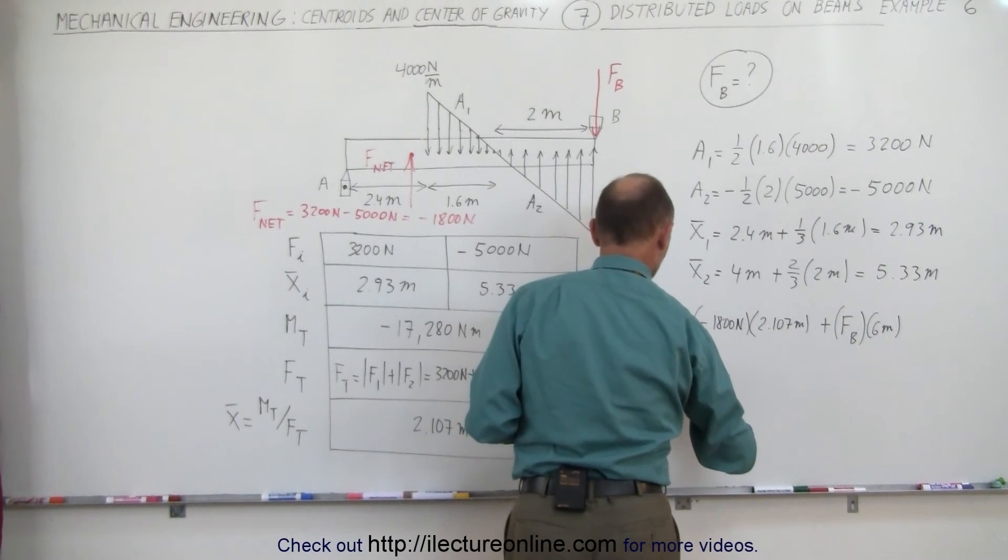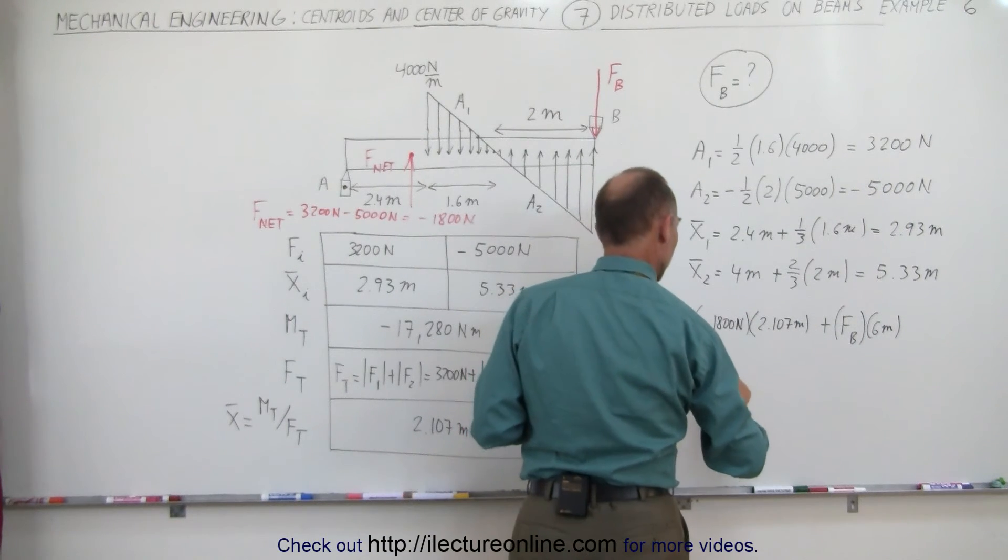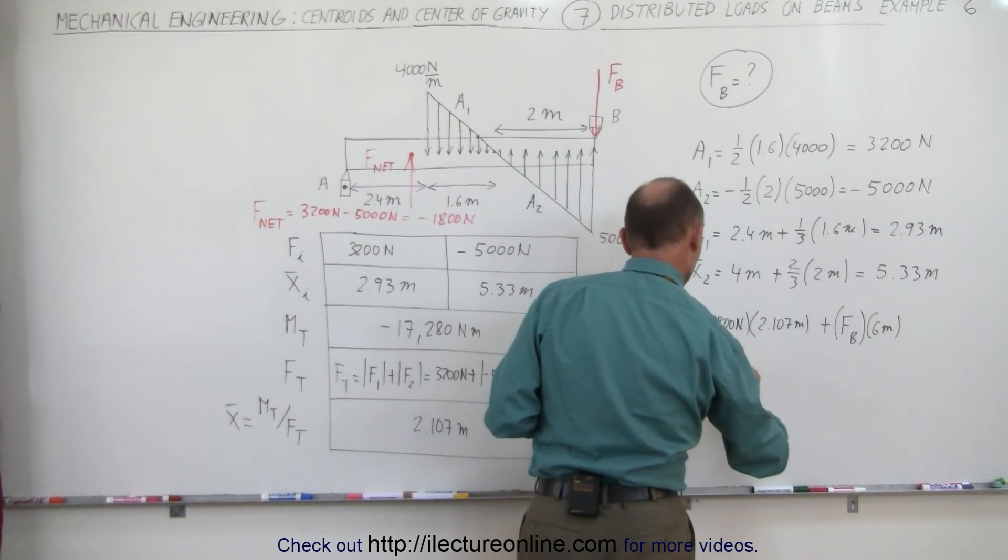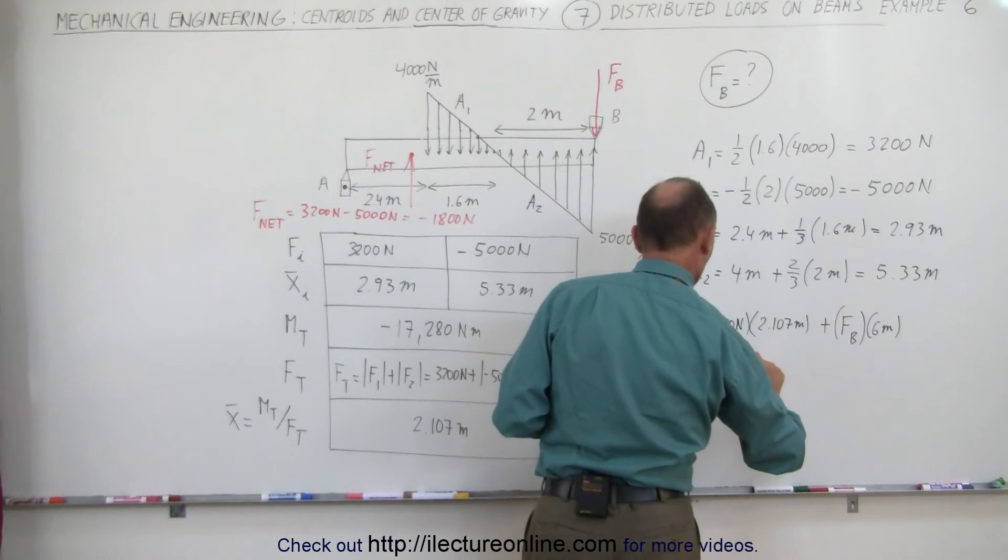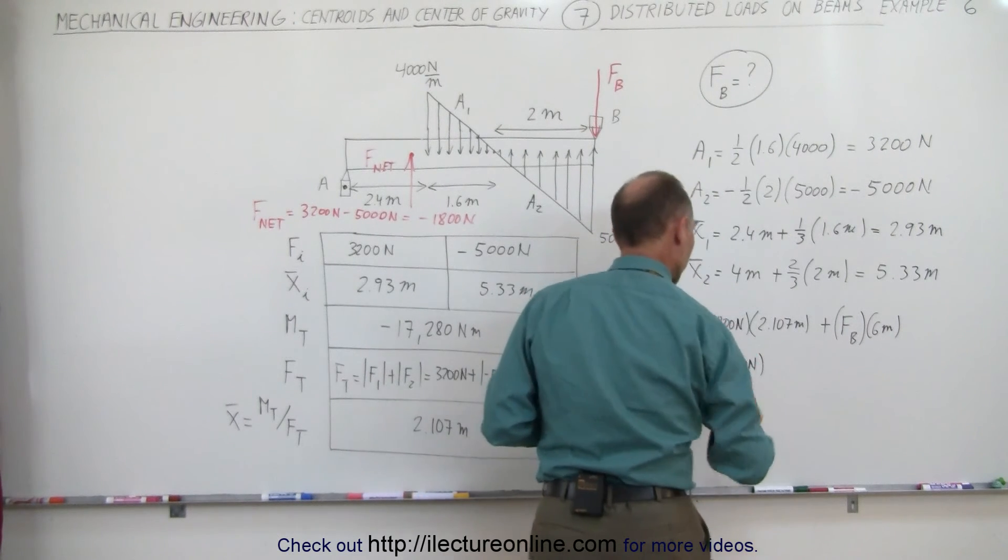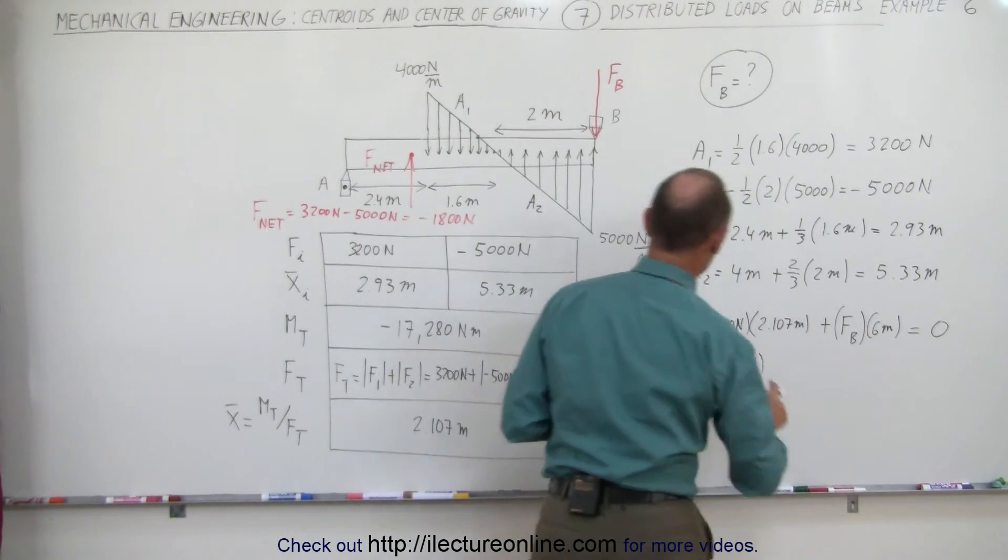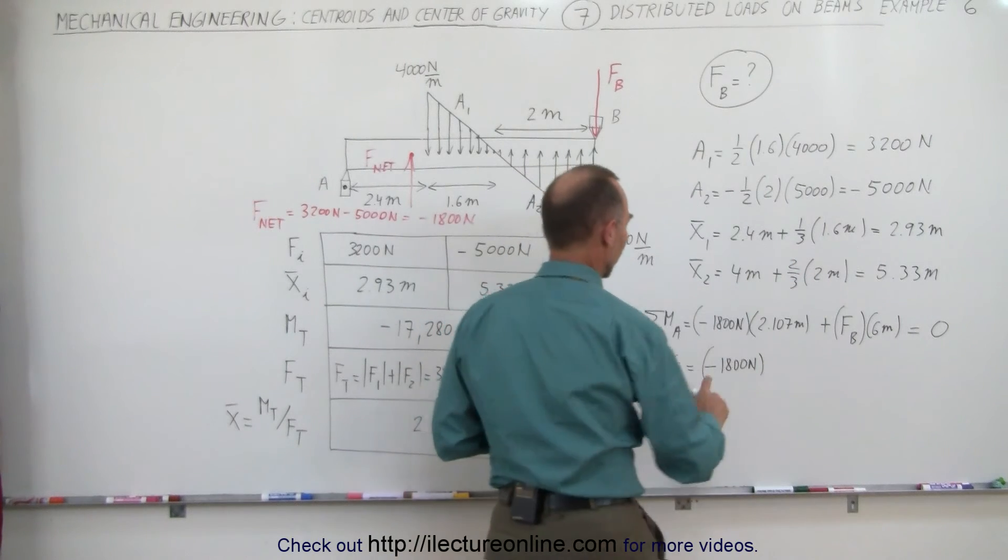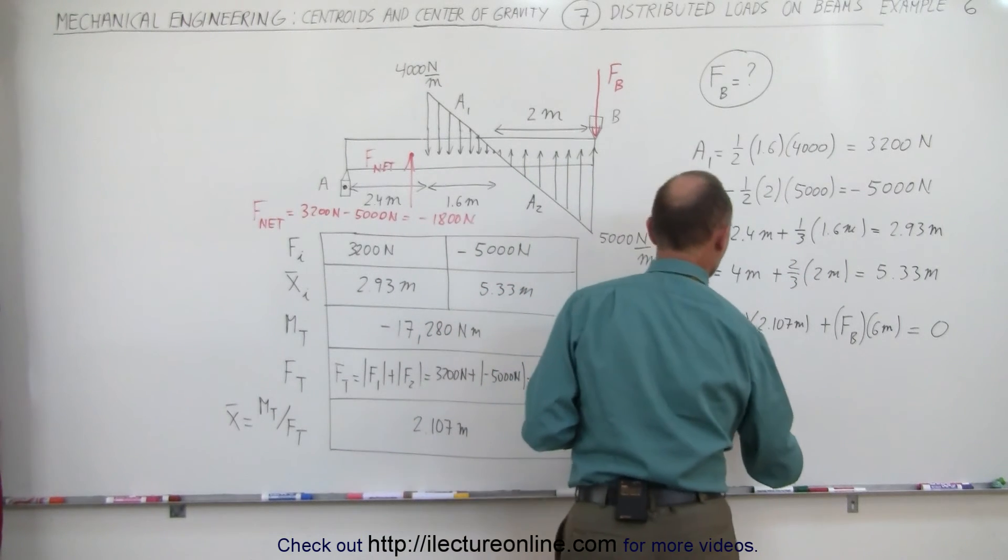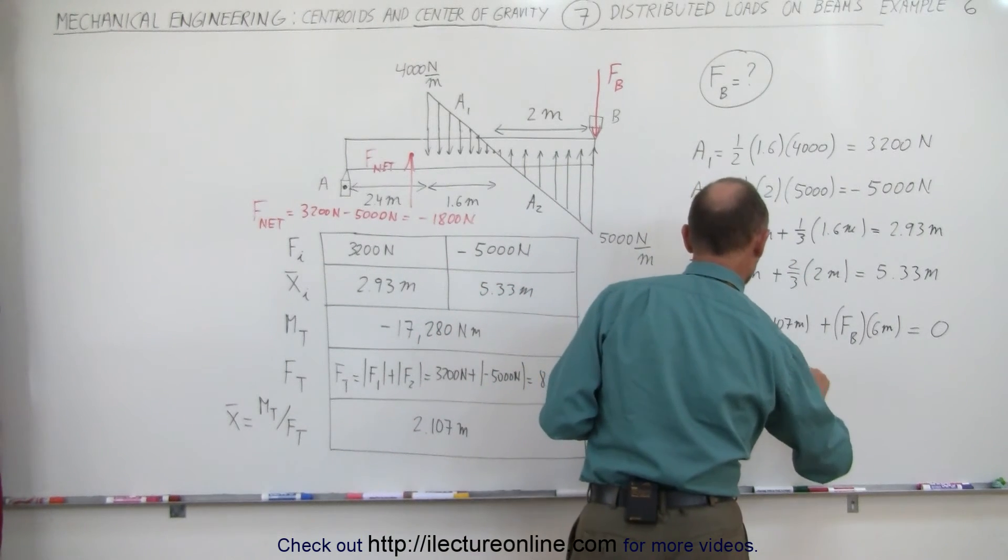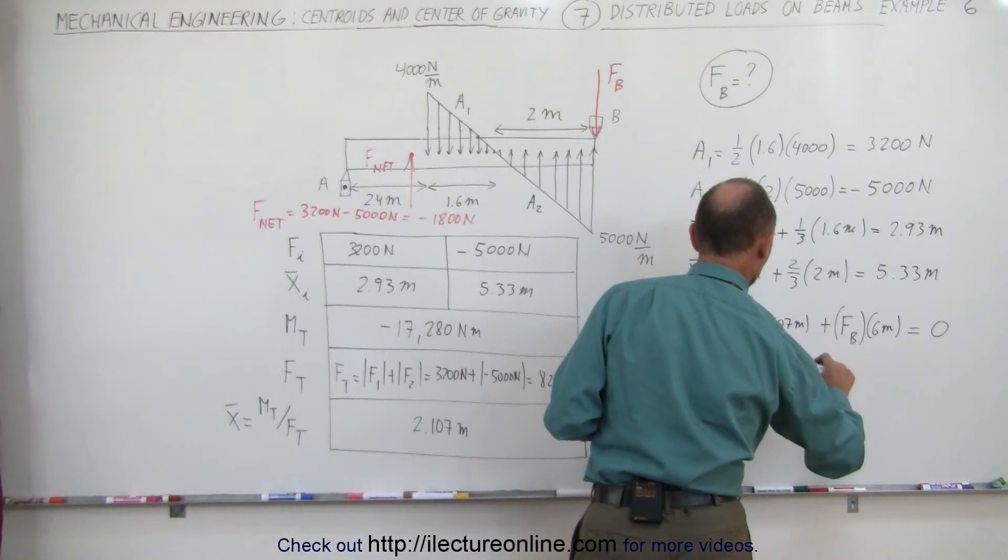Which causes F at B to be equal to minus 1,800 newtons. And be careful about the sign, because this has to add up to zero, because the sum of the moments add up to zero. So the force at B is equal to 1,800 newtons times 2.107 meters divided by 6 meters.